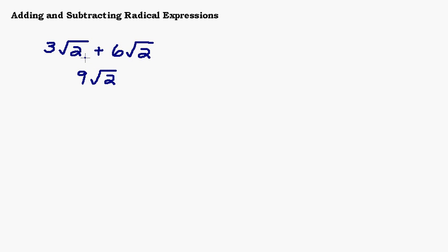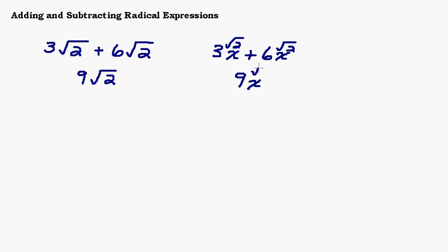Some of you may have wanted to do something with the 2's under the square roots, but let's talk about why you would not do that. Look at something you already know: 3x plus 6x equals 9x. With the radicals, the square root of 2 is simply in place of the x. So 3 square roots of 2 plus 6 square roots of 2 is 9 square roots of 2 — you can think of the square root of 2 as a value of x, and you're simply combining like terms.